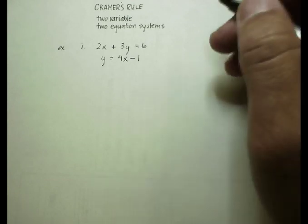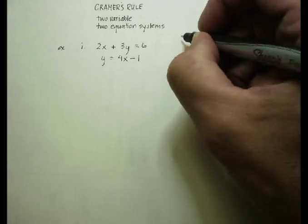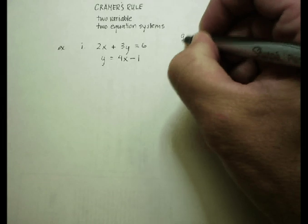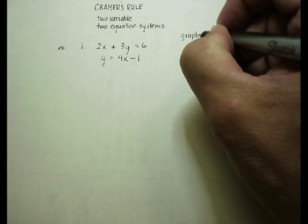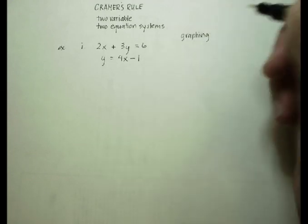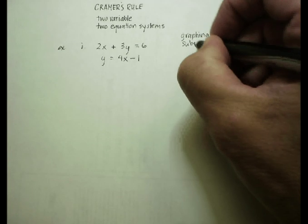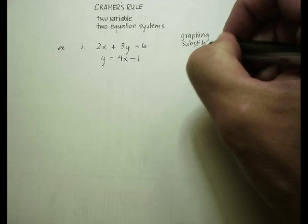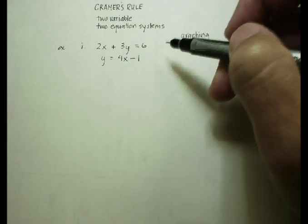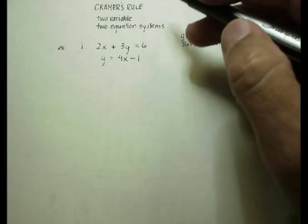Just a quick background, you can solve a system of equations by using graphing, so I could just graph these two equations and find out where they intersect. I can use a method called the substitution method, where I would substitute a variable into the other one and solve for the remaining variable.